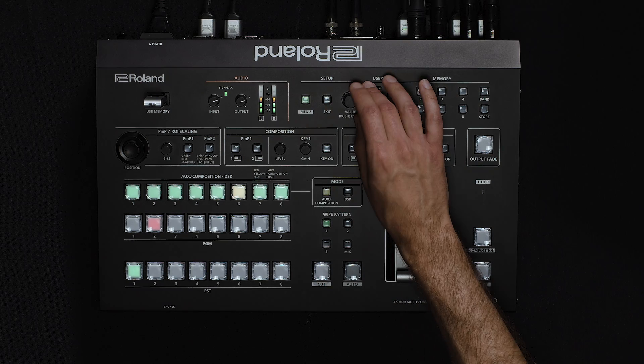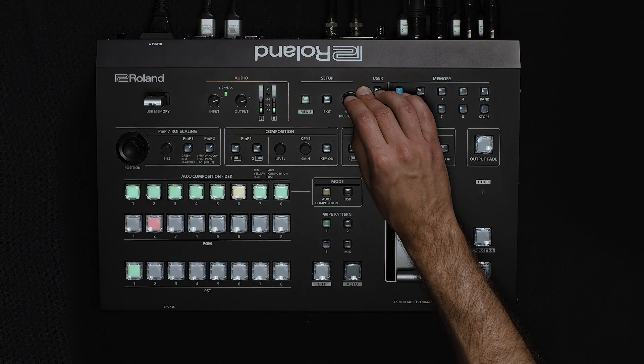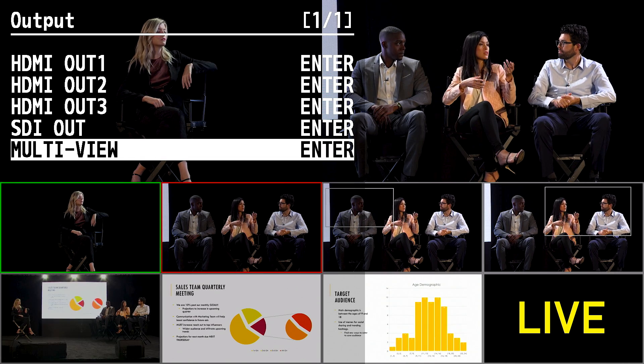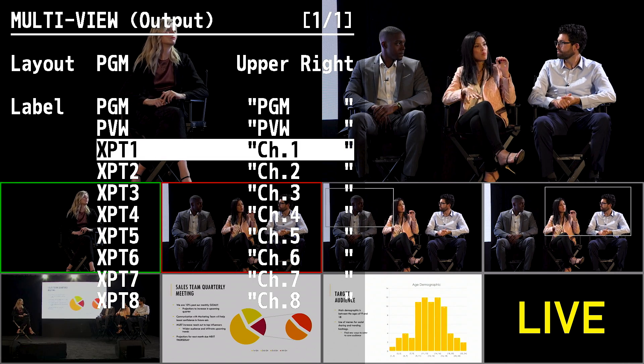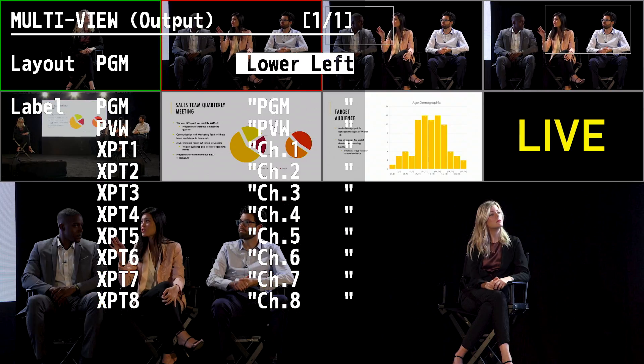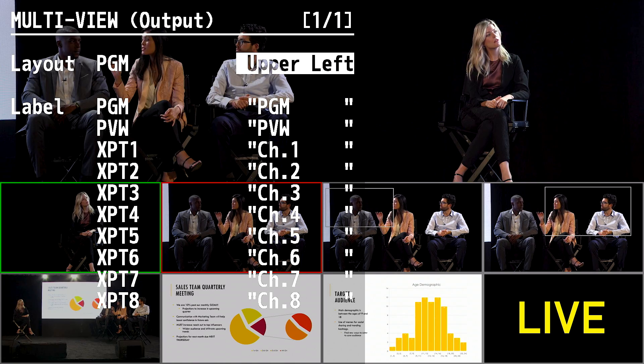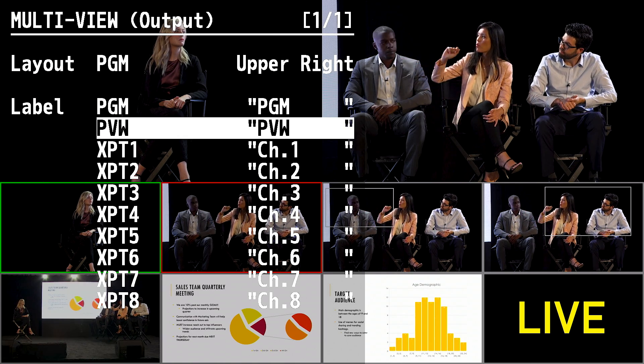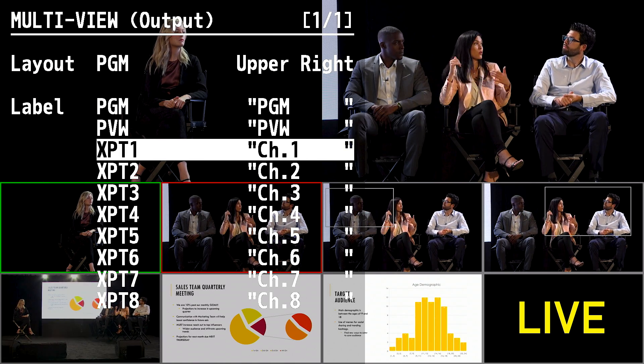Changing it to phones will give you headphone control using the output knob. Next, I'm going to show you how to customize the multiviewer. Press the menu button, go to output followed by multiview, and here you can change the position of the program window, as well as the labels for program, preview, and the eight channels.